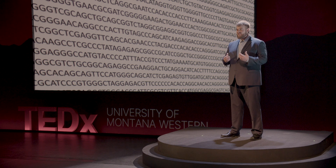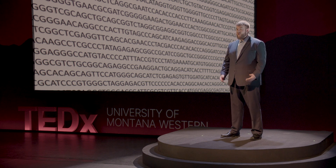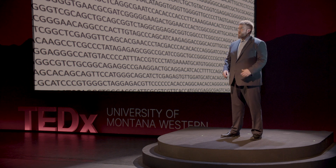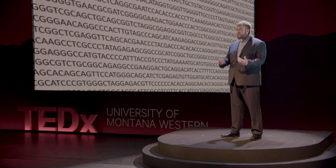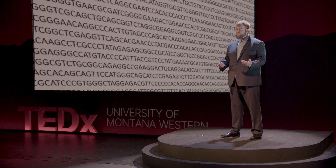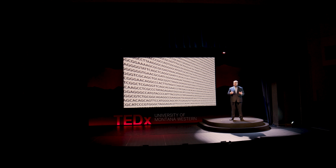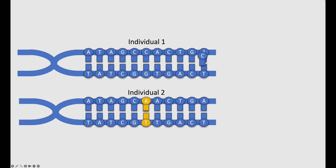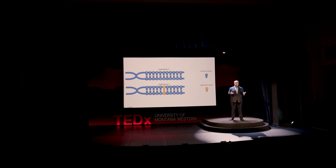DNA is the three billion letter sequence of A's, T's, G's, and C's that we all carry inside of ourselves. For most people, if you were to look at the letters that make up their DNA, you would see that they have the same letter at most positions. However, some people have a different letter at certain positions. This difference in letter at specific positions is called a single nucleotide polymorphism, or SNP for short. SNPs are one of the simplest types of variations in our DNA.